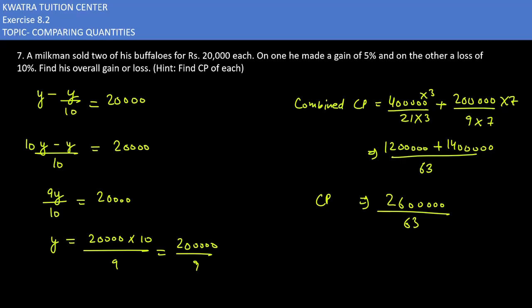Next step is combined SP. You can divide to find the value. Dividing, you get 41,269.84. This is the combined SP.